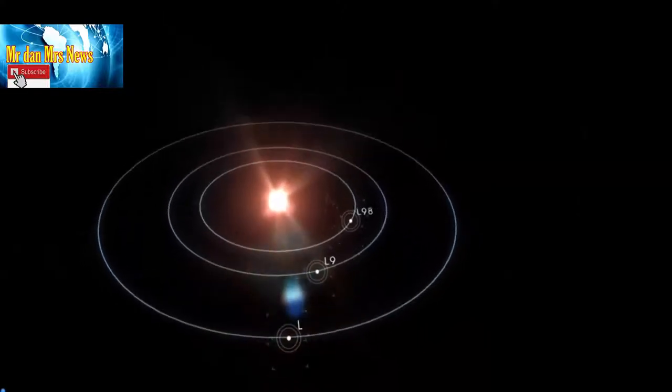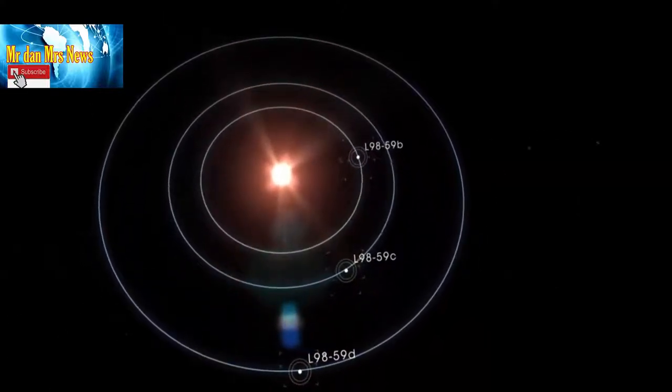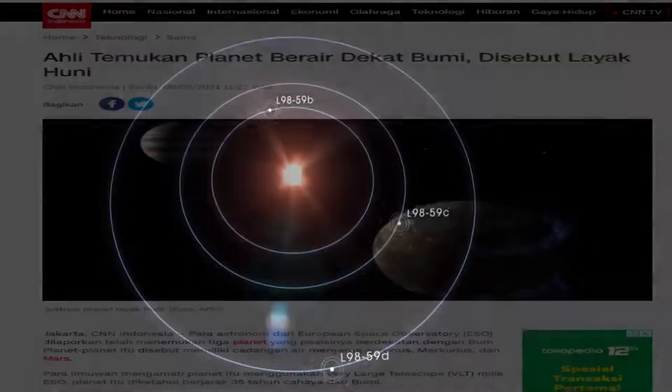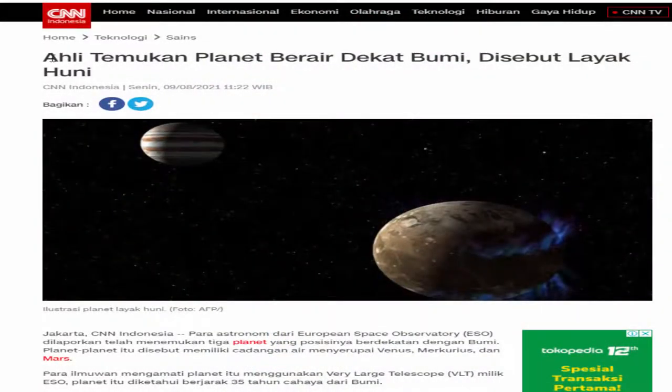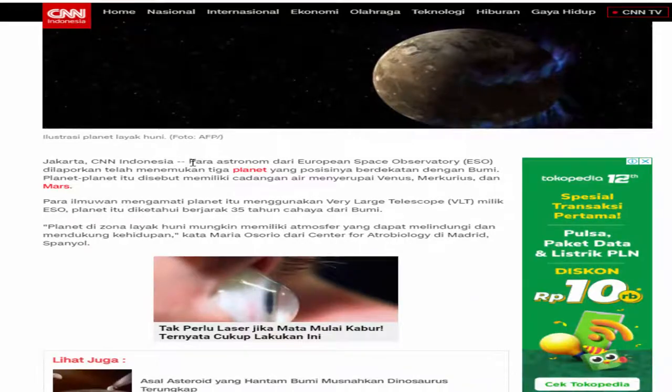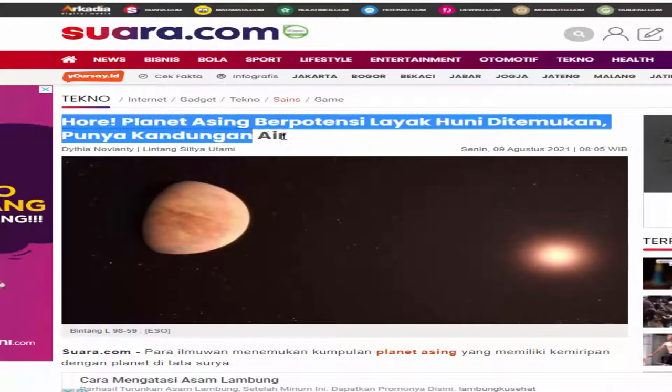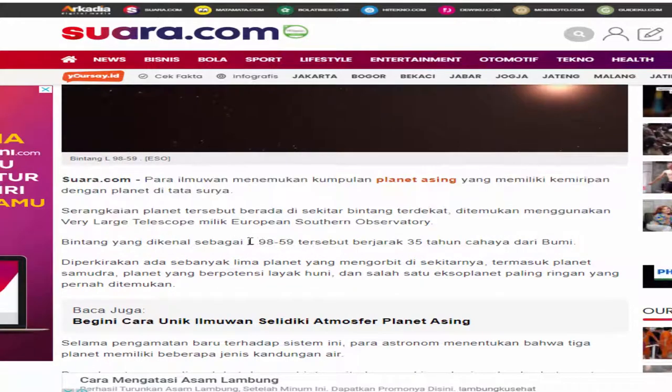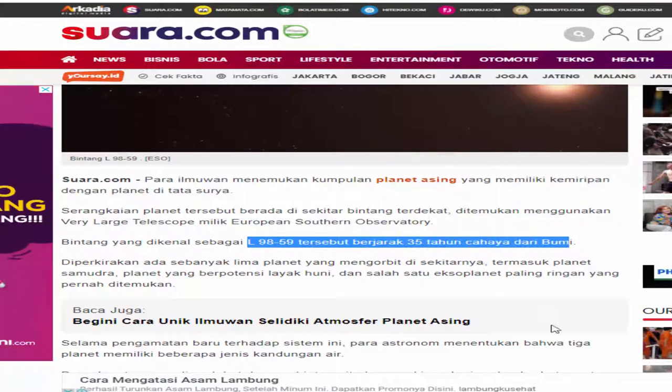Para ilmuwan menemukan kumpulan planet asing yang memiliki kemiripan dengan planet di tata surya. Serangkaian planet tersebut berada di sekitar bintang terdekat, ditemukan menggunakan Very Large Telescope dari European Southern Observatory. Bintang yang dikenal sebagai L98-59 tersebut berjarak 35 tahun cahaya dari bumi.